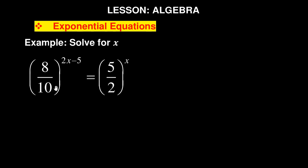I just wanted to show you a few tricks on how you can solve some exponential equations. In this particular problem it says solve for x. This is Mathematics N4 by the way. We're given: (8/10) to the power of (2x minus 5) is equal to (5/2) to the power of x.